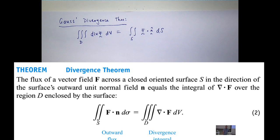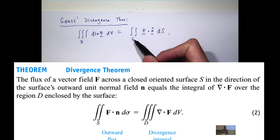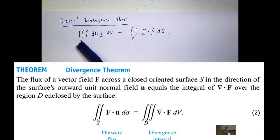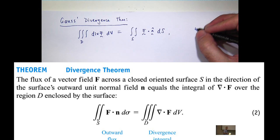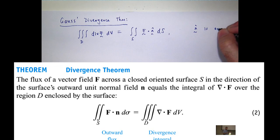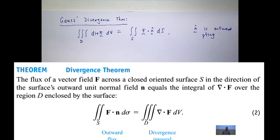You've got a vector field F, some solid region D. Now, D might be a filled sphere or a filled can or a filled cube. S is the surface that bounds this region D. N here is just the outward pointing unit normal vector.